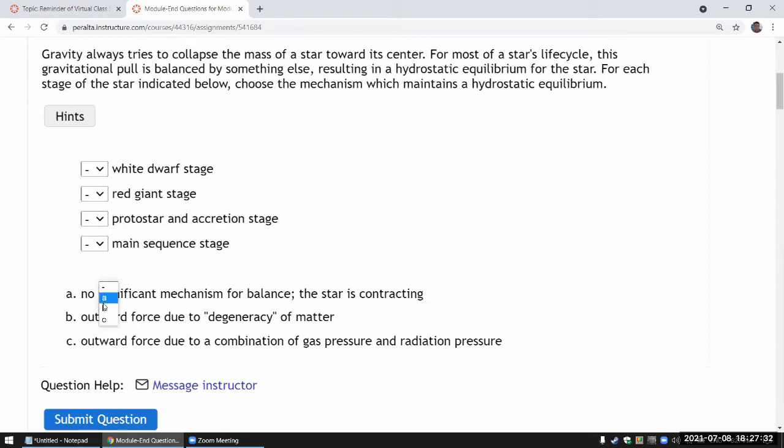And once it contracts enough and nuclear fusion starts, then it starts the main sequence stage. This is the stable stage of a star's life. It spends most of its life there. Like for a star like our sun, it'll spend 10 billion years on this stage.